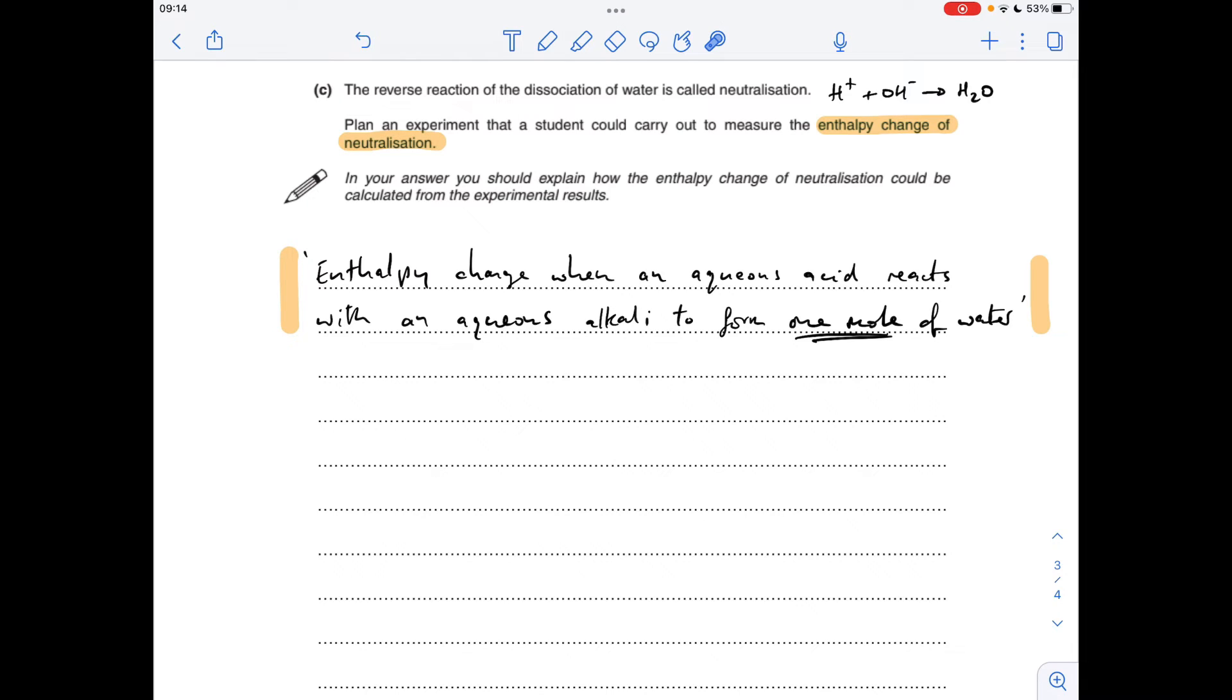The enthalpy change when an aqueous acid reacts with an aqueous alkali to form one mole of water. So I think the tricky part of a question like this is the fact that it's not a calculation where they've given you the data to just number crunch. You've got to come up with some suitable data and then talk about how you would process that to get the measure of the enthalpy change of neutralisation.